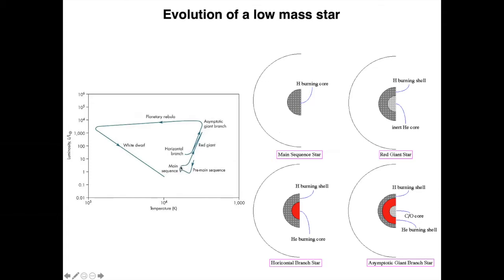As convection deepens, it eventually reaches the red giant branch where you have the inert helium core, the hydrogen burning shell, and convection going all the way to this burning shell and making the star swell.